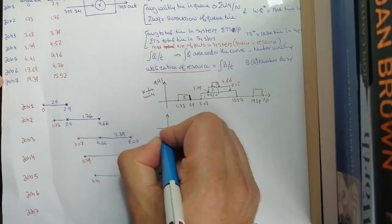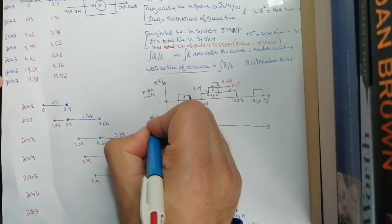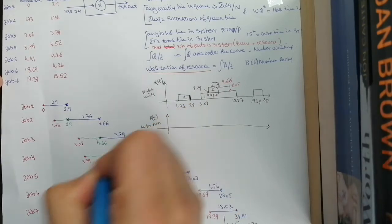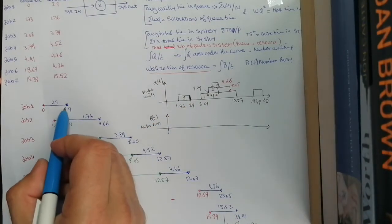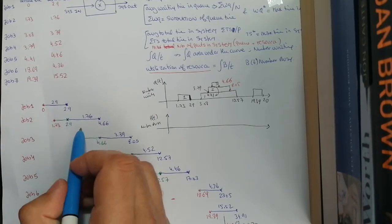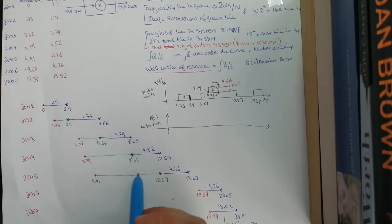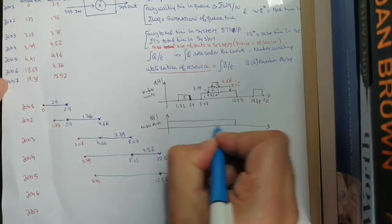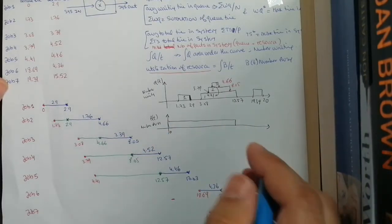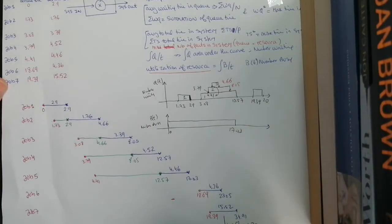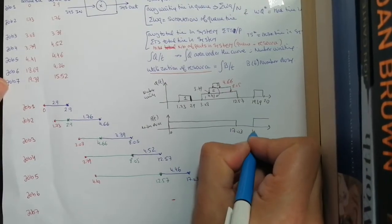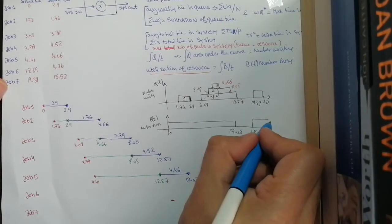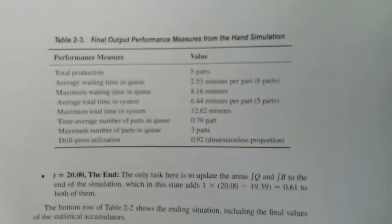Now let's draw the server busy diagram, Bt. The server is busy from 0 to 2.9, then 2.9 to 4.66, 4.66 to 8.05, 8.05 to 12.57, and 12.57 to 17.03 — essentially always busy from 0 to 17.03. Then it is busy again from 18.69 all the way to the end of the observation window.